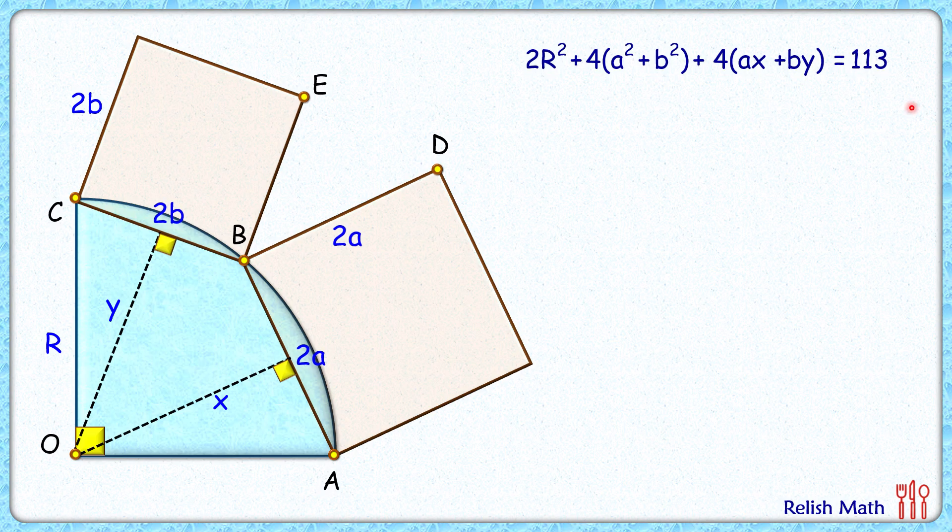Now to solve it, we have to eliminate a and b. For that we'll first find the value of 4a² + b² separately, then we'll find the value of ax + by separately. We'll replace these values in this given equation and solve it to get the value of r. So let's first find the value of 4a² + b².